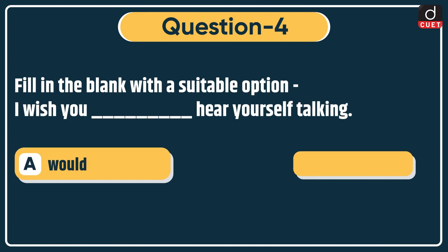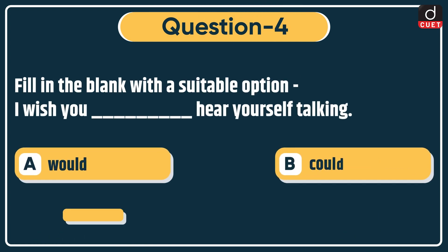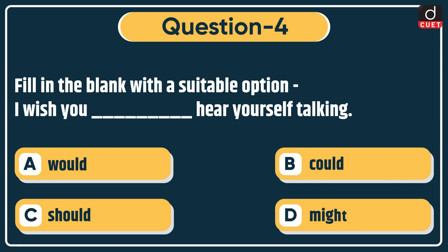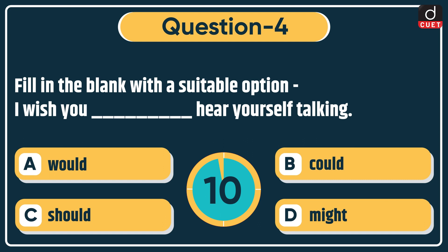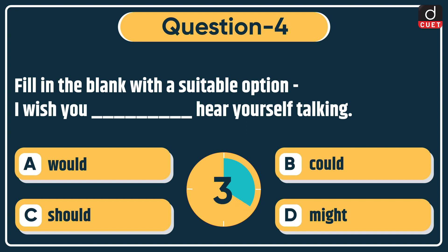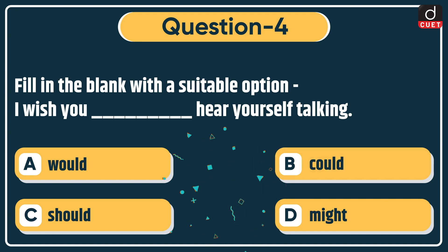Next question: fill in the blank with a suitable option. 'I wish you dash here yourself talking.' Options: Would, Could, Should, or Might. The correct answer is option B: Could.